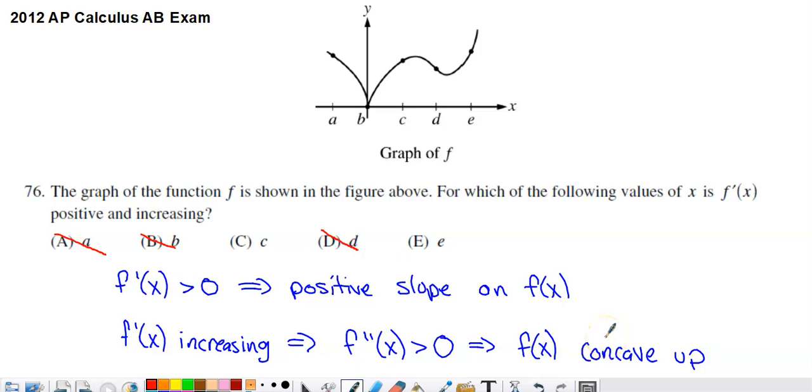So a function is concave up anywhere where its second derivative is positive. Therefore, to determine where the second derivative is positive, we're going to have to look for where this function, which we have access to the graph of, is concave up.